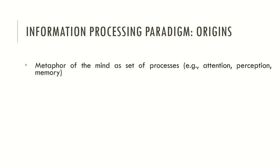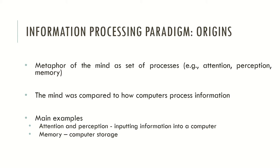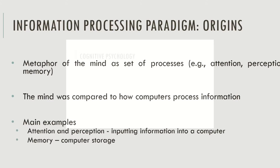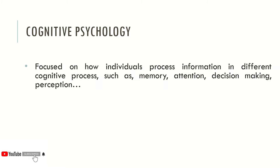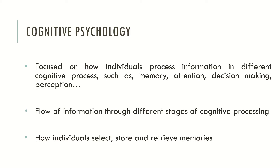The mind was compared to how computers process information. For example, attention and perception may be related to inputting information into a computer, and memory may be similar to computer storage. Cognitive psychology was very much influenced by this theory and started to focus on how individuals process information across different cognitive processes such as memory, attention, decision making, and perception — specifically, the flow of information through different stages of cognitive processing, and how individuals select, store, and retrieve memories.